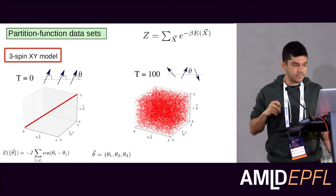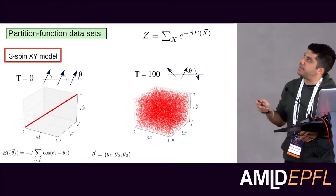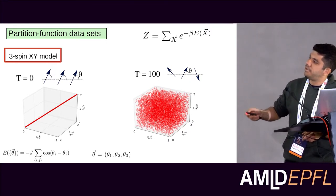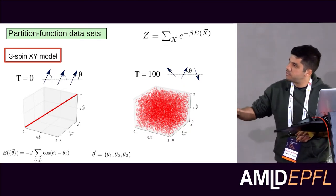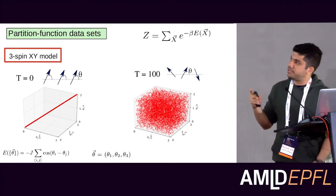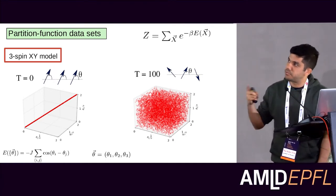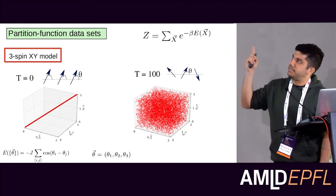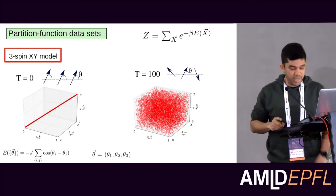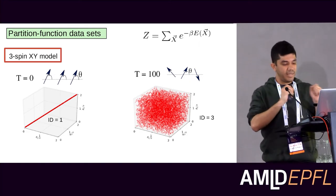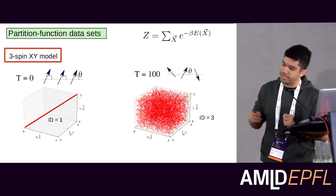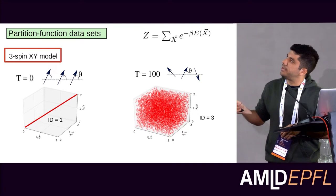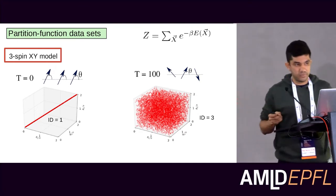Now let me give another intuition using a physical data set — a classical data set sampled from the partition function of a three-spin XY model. For T equals zero, correlations between coordinates are very strong, giving an intrinsic dimension equal to one. At very large temperature, the intrinsic dimension equals three — the number of spins.